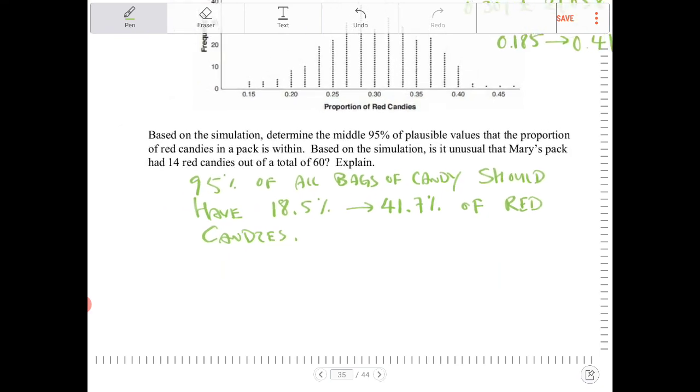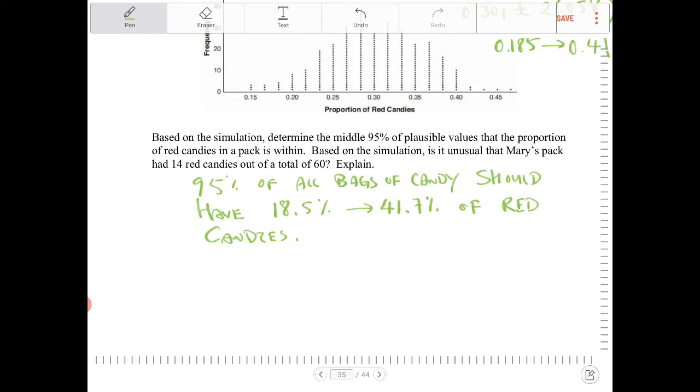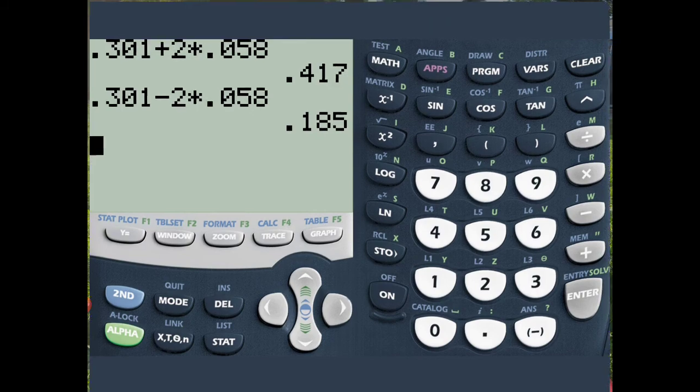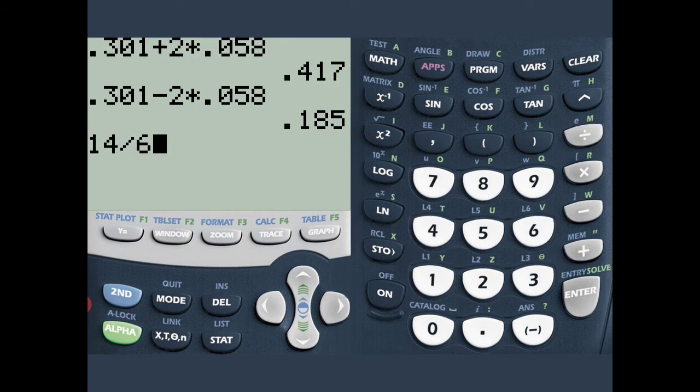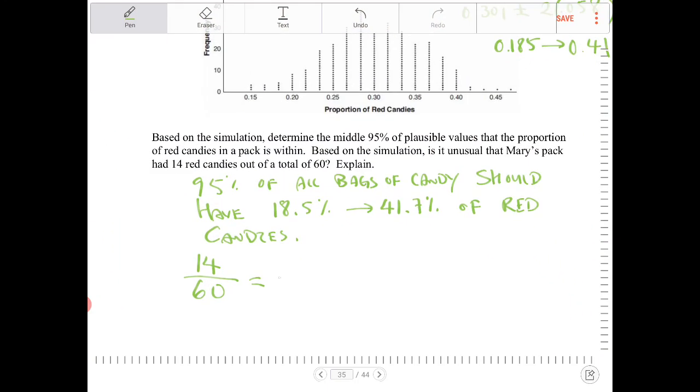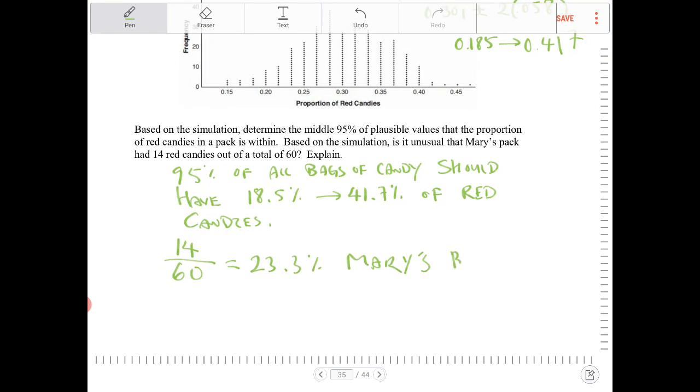So, based on the simulation, is it unusual that Mary's pack had 14 red candies? So, 14 out of the 60 is equal to, let's see, what is that percentage? So, 14 divided by 60 is 23.3%. So, Mary's bag had 23.3% red.